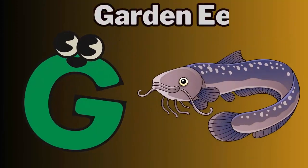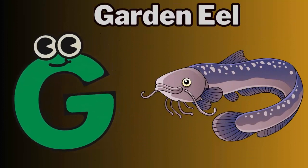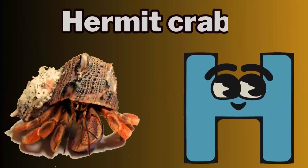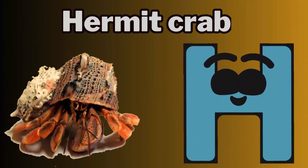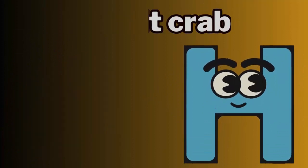G is for garden eel. Guh, garden eel. H is for hermit crab. Ha, hermit crab.